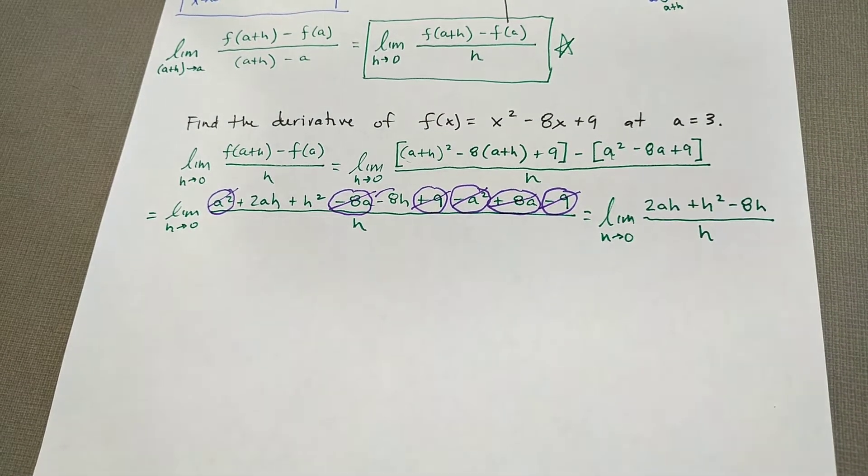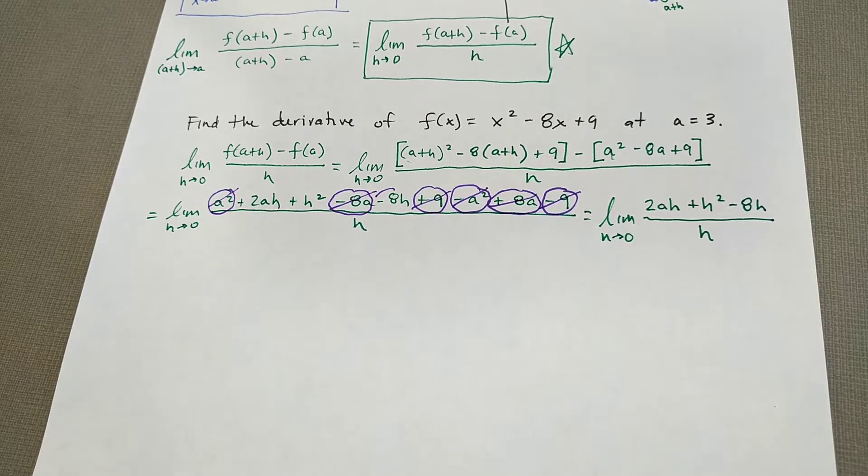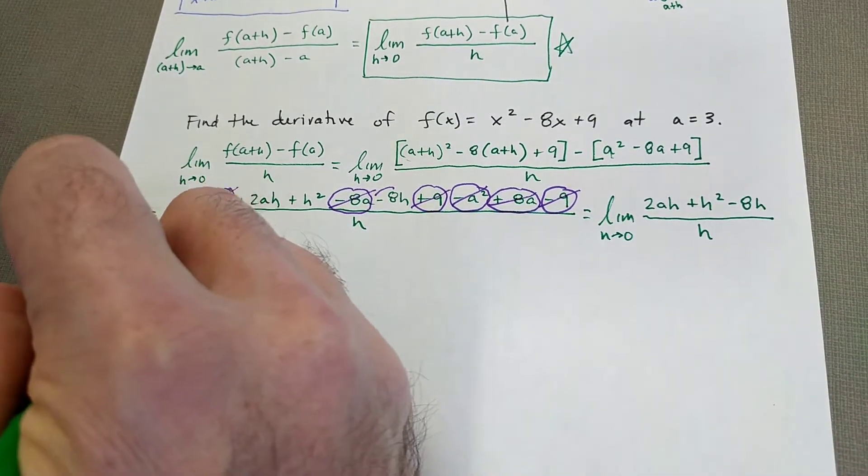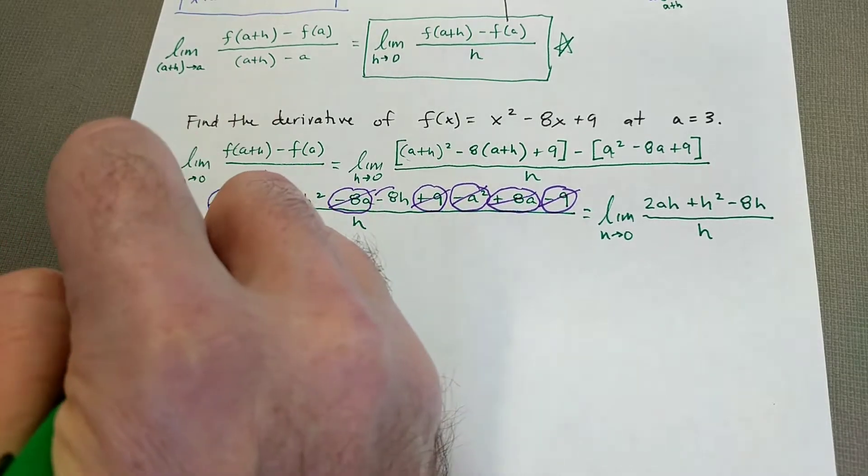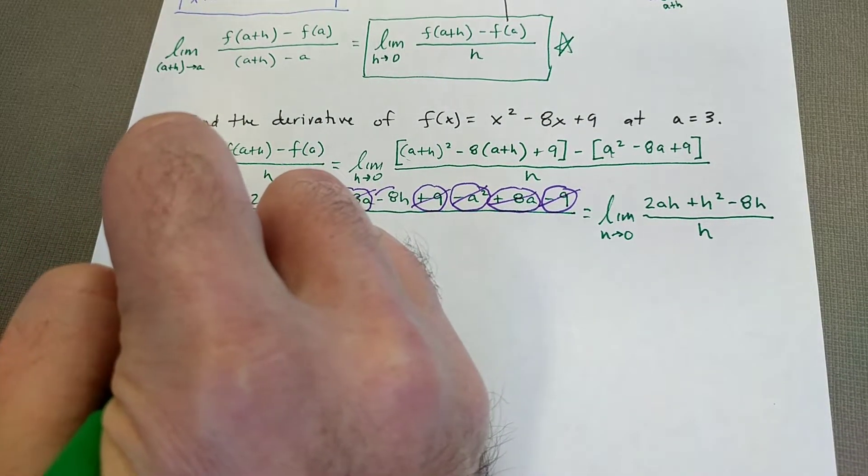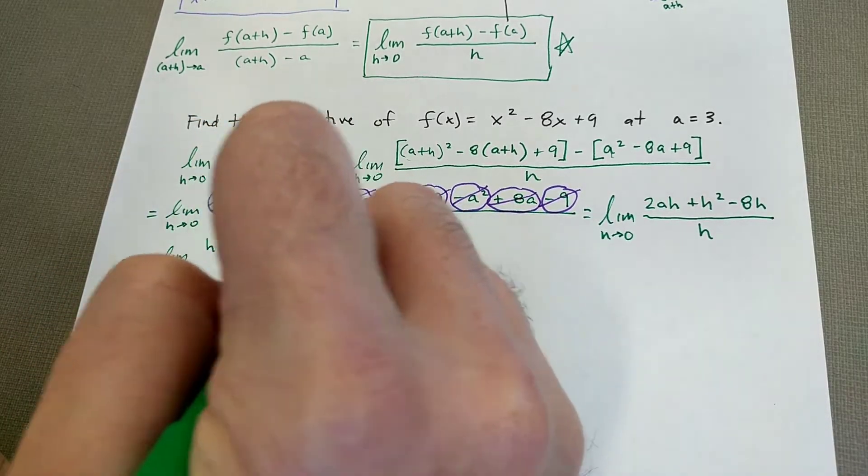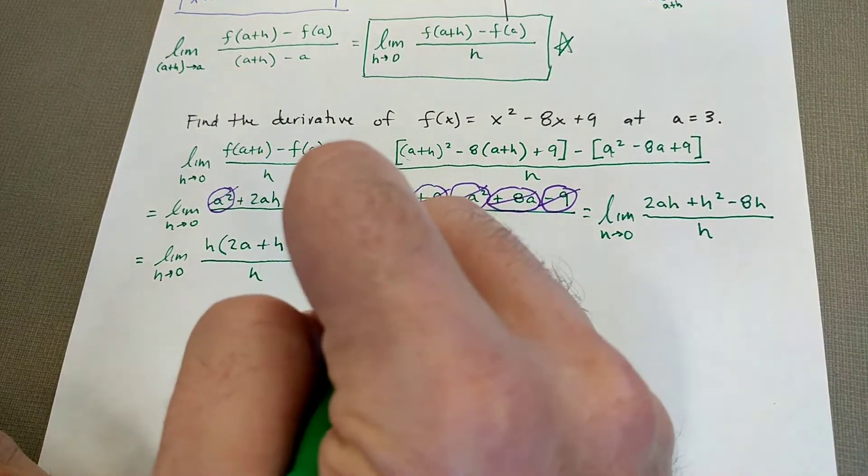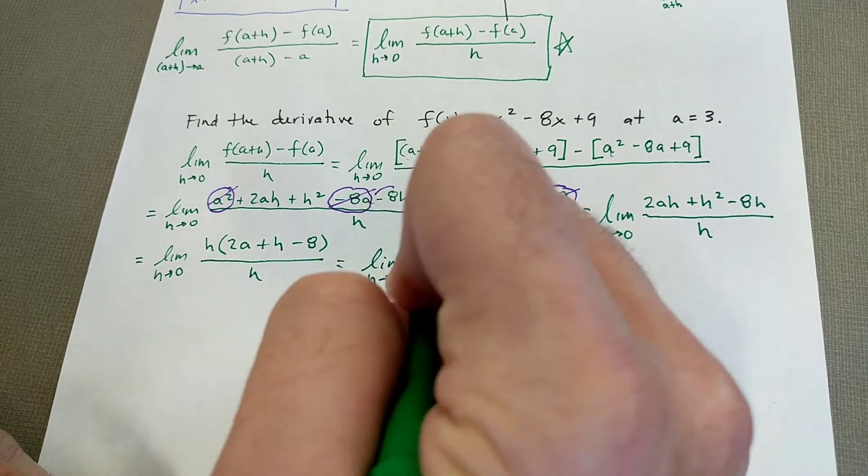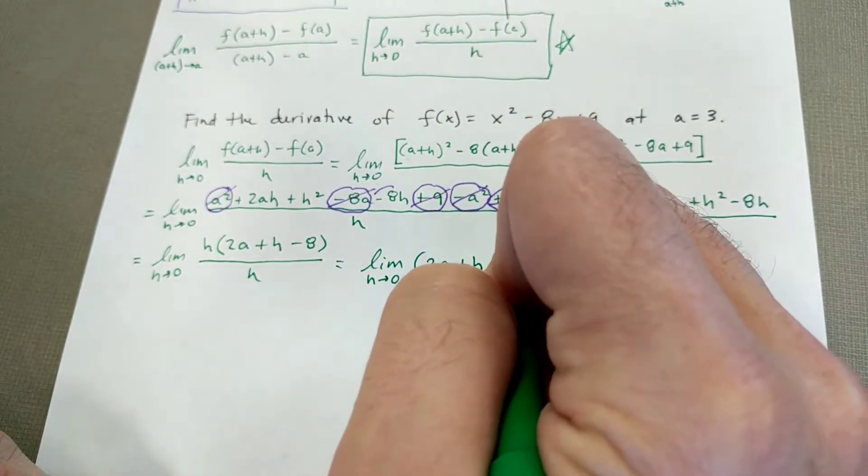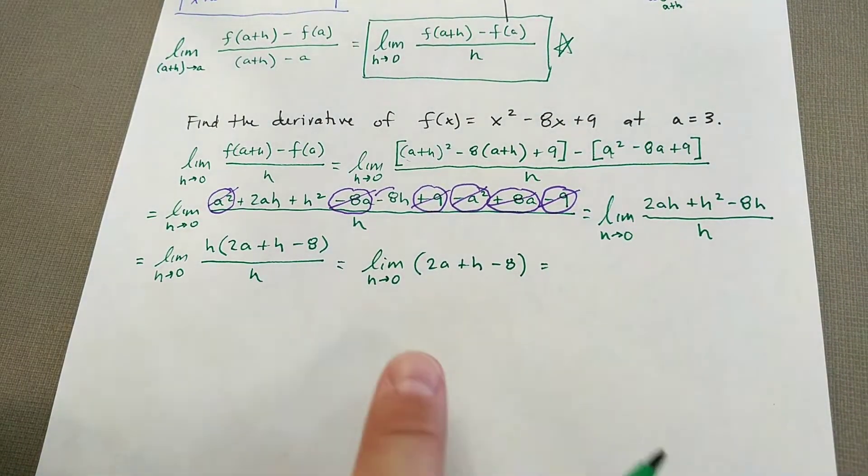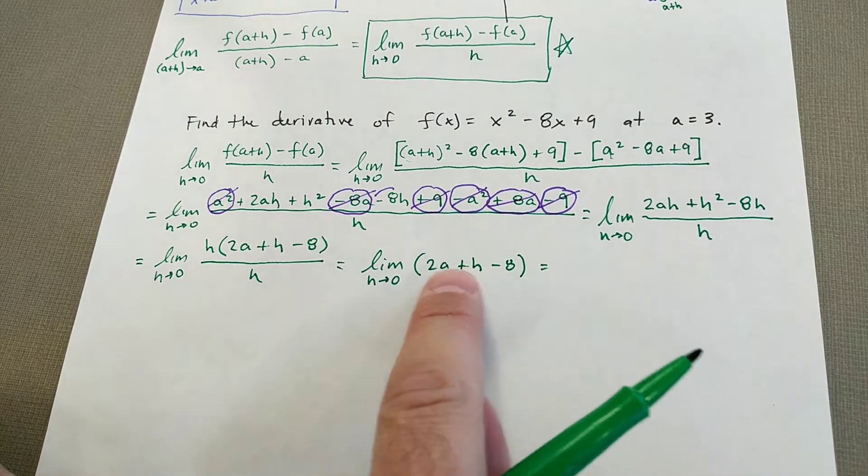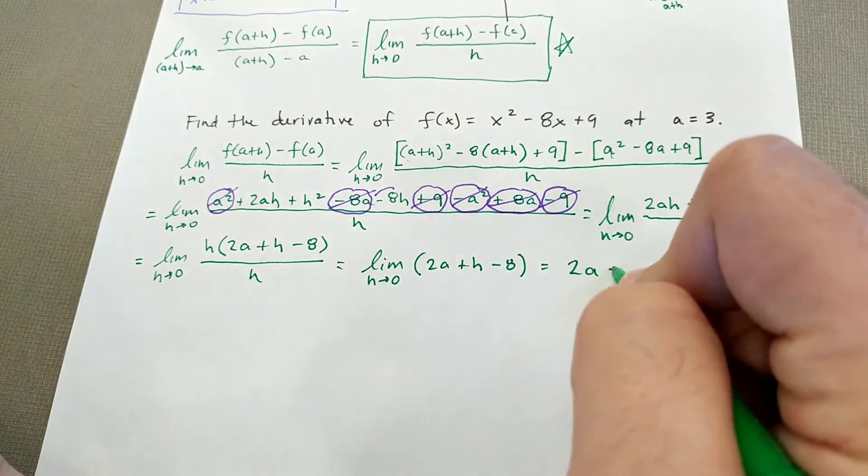So what does that leave behind for us? We've got 2AH plus H squared minus 8H all over H. So now at this point, I notice again, everything in my numerator has a factor of H. So let's factor out an H because I noticed that that will divide with my denominator. So if I factor out an H, I get 2A plus H minus 8 all over H. H's divide, leaving me now with the limit as H approaches 0 of 2A plus H minus 8. And now we can evaluate this limit because there's not a problem. So we plug in H as 0. Don't have to worry about the other terms. They don't have H's. So we get 2A minus 8.